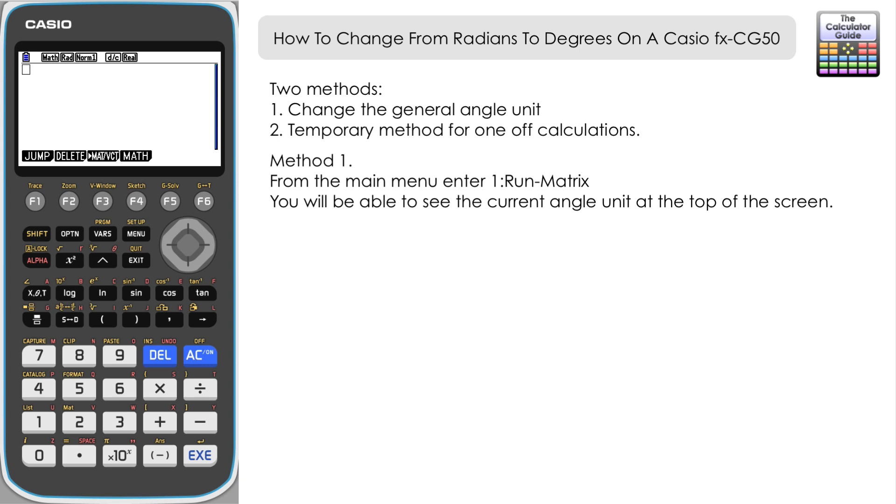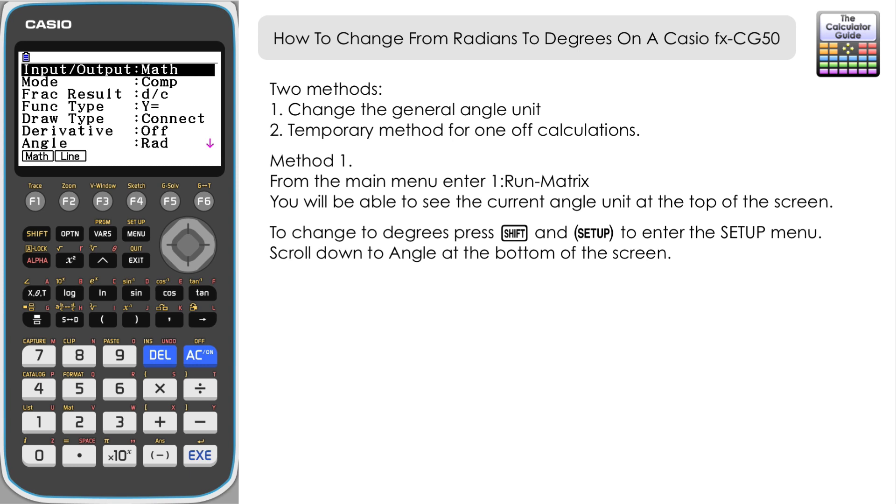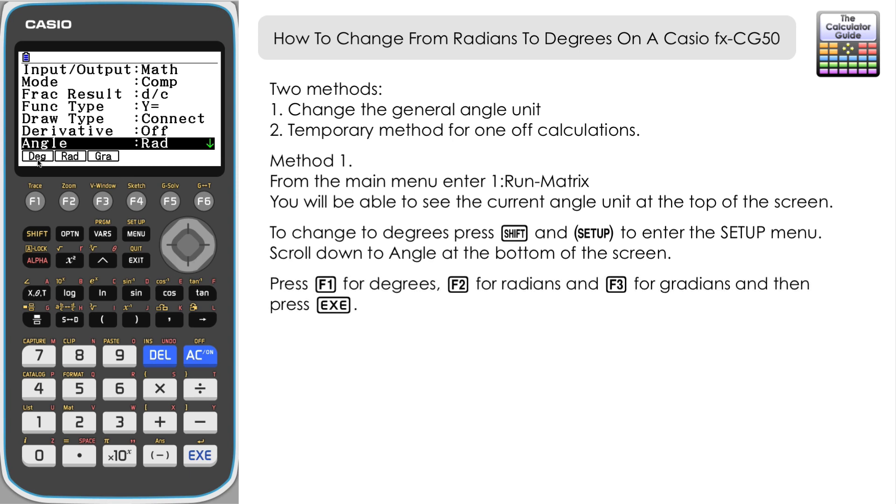So that the permanent setup on the calculator is degrees, we need to go to the setup menu—shift and setup—and then scroll down. We can see the last option on the first page is Angle. We've actually got three choices here: degrees, radians, and gradians as well if you need those. But we want degrees, so we're just going to press F1.